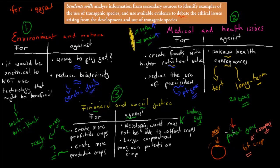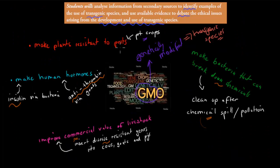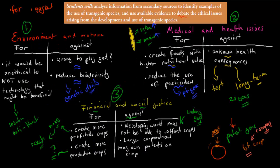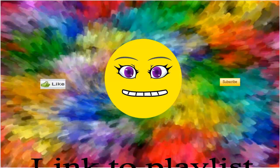So for this dot point, you should know the first part, which is some of the uses of transgenic species. The second part was, you've got your three issues that are listed, ethical issues, and should be able to debate them, both the for and the against point. I hope that was useful. Thank you for watching.